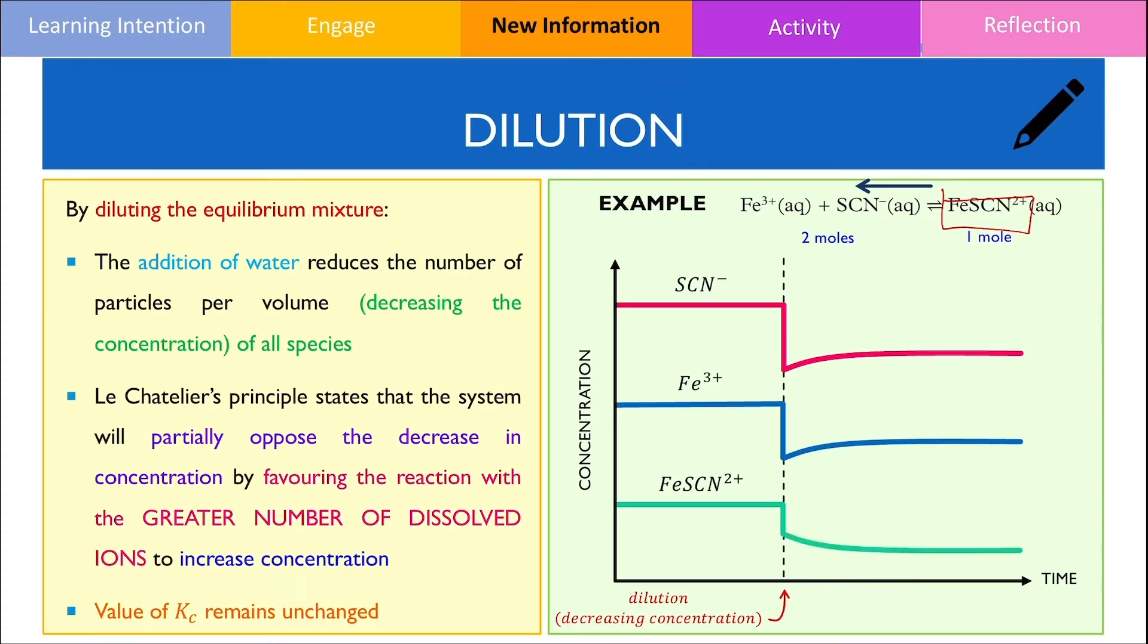Furthermore, if we look at the chemical equation, we can see that the molar coefficient of each aqueous species is 1. Hence, the magnitude for the change in concentration for each of these ions is identical.